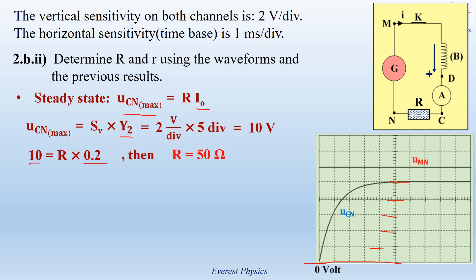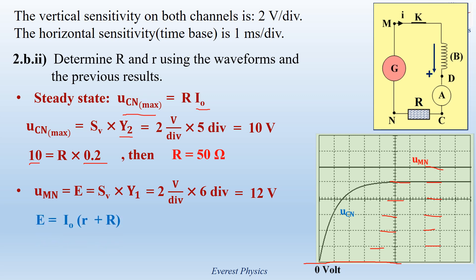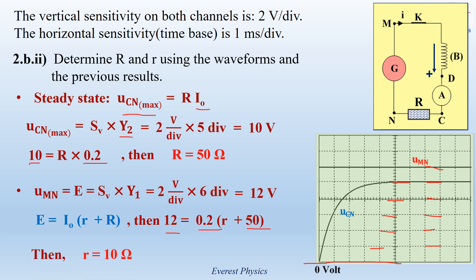Now calculating the internal resistance of the coil: UMN equals SV times Y1, where Y1 is the number of vertical divisions for UMN. Counting: Y1 equals 6 divisions. Since SV equals 2 volts per division, UMN, which equals E, equals 12 volts. Using E equals I0·(r + R): replacing E by 12 volts, R by 50 ohms, and I0 by 0.2 amperes, the internal resistance of the coil r equals 10 ohms.